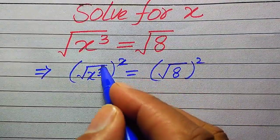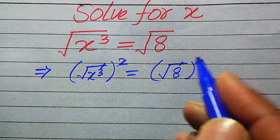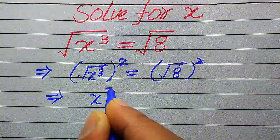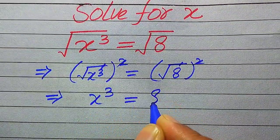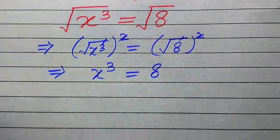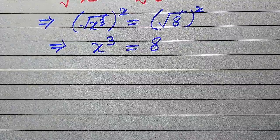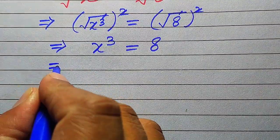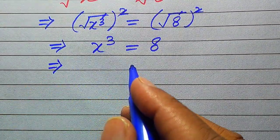Now you can see that the square and the square root are cancelled on both sides, and we get x cubed equals 8. So this equation is converted from radical to cubic form, and we can easily use cubic formulas to get the values of x.